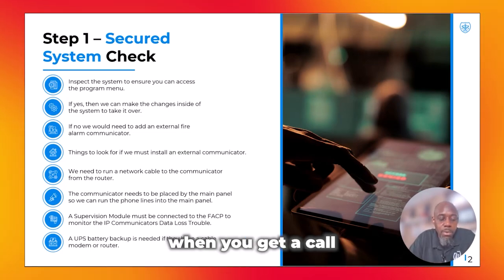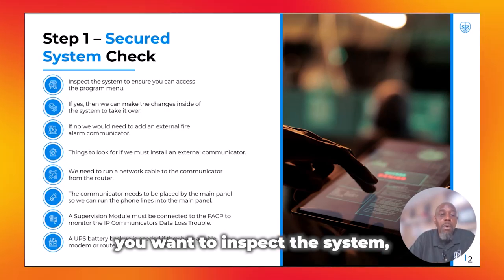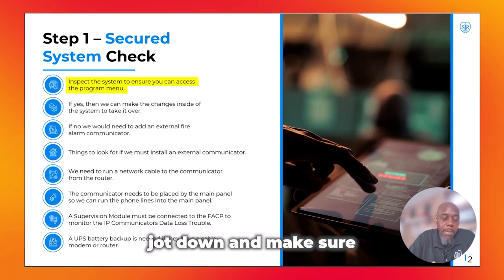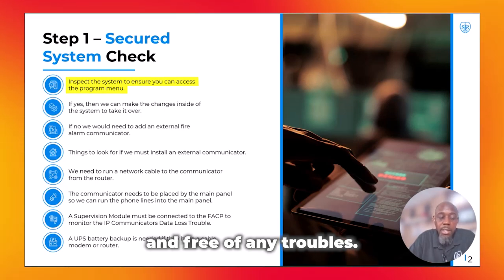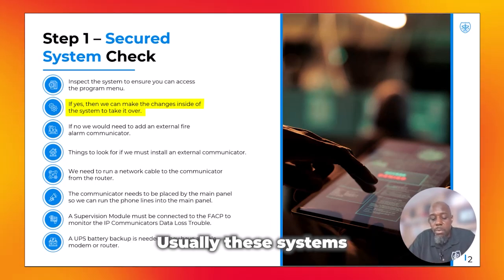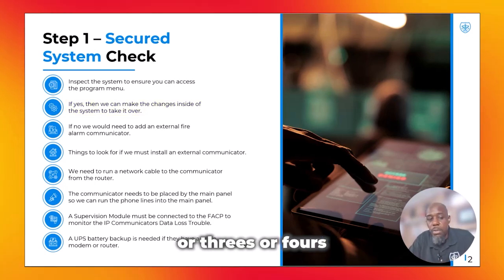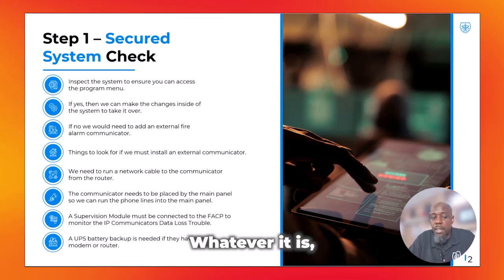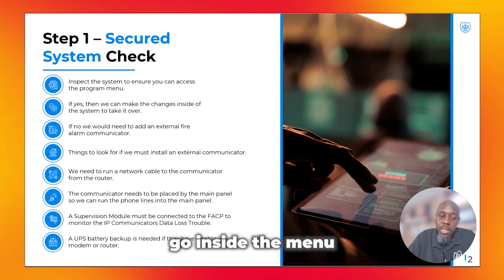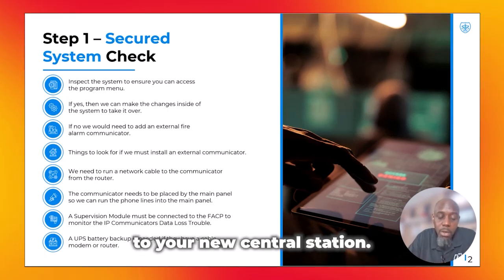The first thing you want to do when you get a call from a customer to check a fire alarm system for new activation is inspect the system. Make sure there are no existing troubles and the system is clear. Then make sure you can get into the program menu — usually these systems have a default password like 2s, 3s, 4s, 1s, 0s, or 6s. Once inside, change the account number and receiver numbers to point those receivers to your new central station.